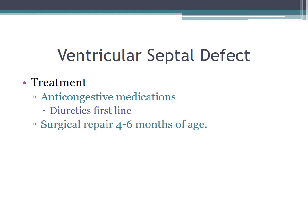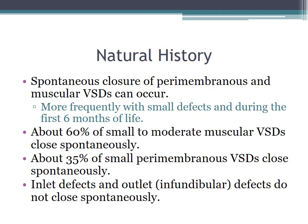Treatment for VSDs is typically diuretics, with surgical repair by four to six months of age to prevent pulmonary vascular occlusive disease and eventual Eisenmenger syndrome. Spontaneous closure of paramembranous and muscular VSDs can occur, more frequently with small defects during the first six months of life. About 60% of moderate muscular VSDs close spontaneously, and paramembranous VSDs close about 35% of the time. Inlet and infundibular defects often do not close spontaneously.